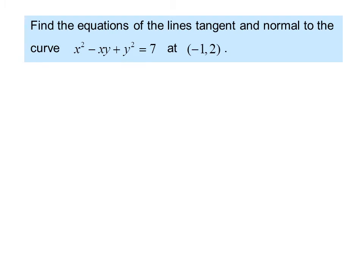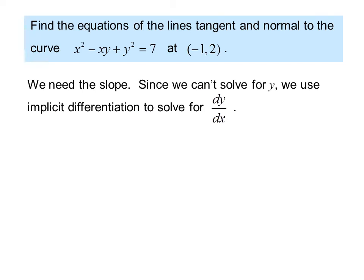Example: find the equations of the lines tangent and normal to the curve x squared minus xy plus y squared equals 7 at (-1, 2). We need the slope. We can't solve for y, so we use implicit differentiation to solve for dy/dx.